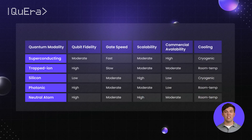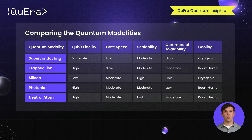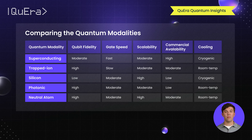In summary, each quantum computing modality offers unique advantages and trade-offs. Superconducting qubits are fast and widely available, but require extreme cooling and are sensitive to noise. Trapped ion systems are highly precise, but slower and harder to scale.